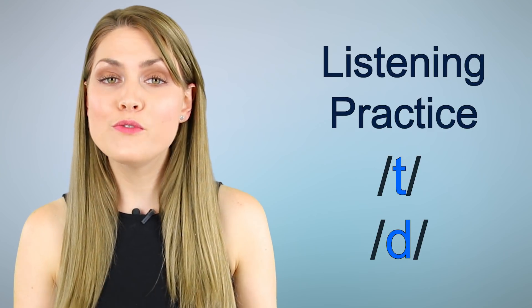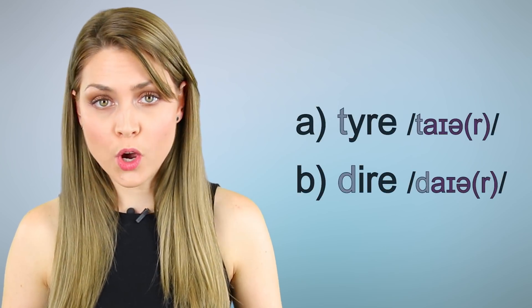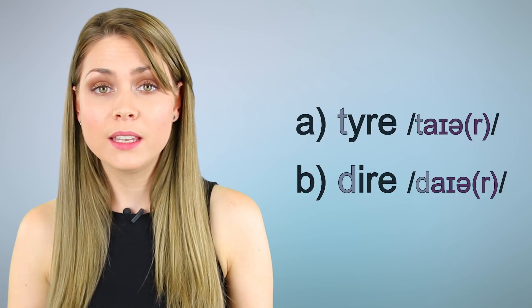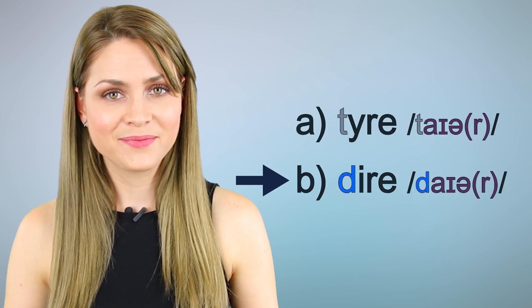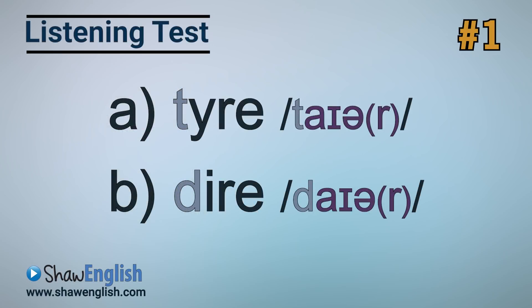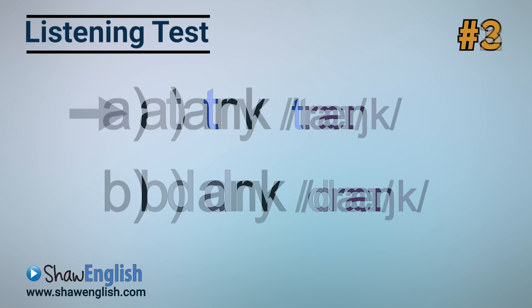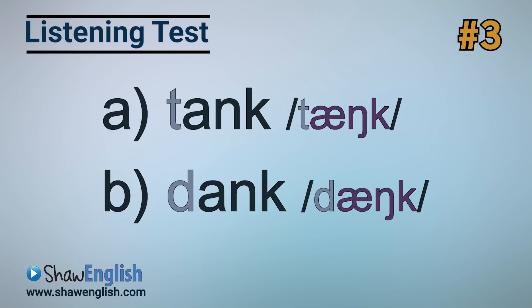Let's now move on to listening practice. I'm going to show you two words, say one of them, and I want you to listen carefully and tell me if the word is A or B. Let's get started. Which word do I say — A or B? Tire. One more time: Tire. Word A is 'tire,' B is 'dire.' Next: Dry. It's word B — 'dry.' Word A is 'try.' Next: Dank. It's word B — 'dank.' A is 'tank.'